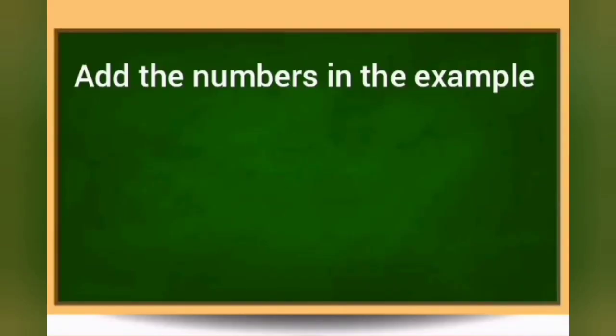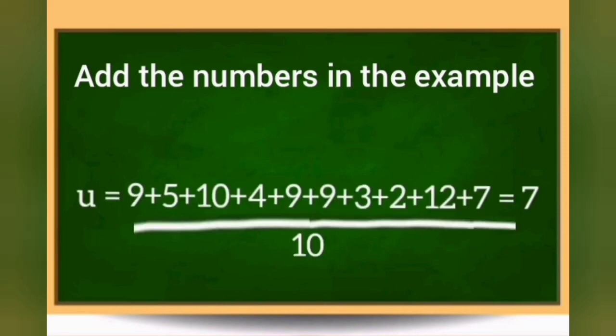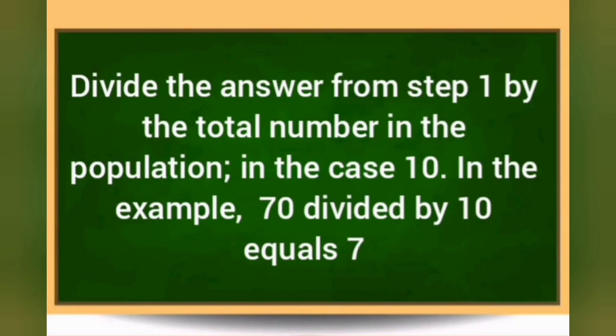Step number 1: Add the numbers in the example. Step number 2: Divide the answer from step 1 by the total number in the population, which is 10. 70 divided by 10 equals 7.